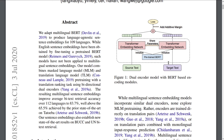They further fine-tune this transformer encoder network on parallel data consisting of parallel sentences in different languages, for example English and German sentences. Given two such sentences, they pass them through the same transformer encoder network, which produces sentence embeddings, and then apply a loss function to fine-tune the encoder on these parallel sentences.